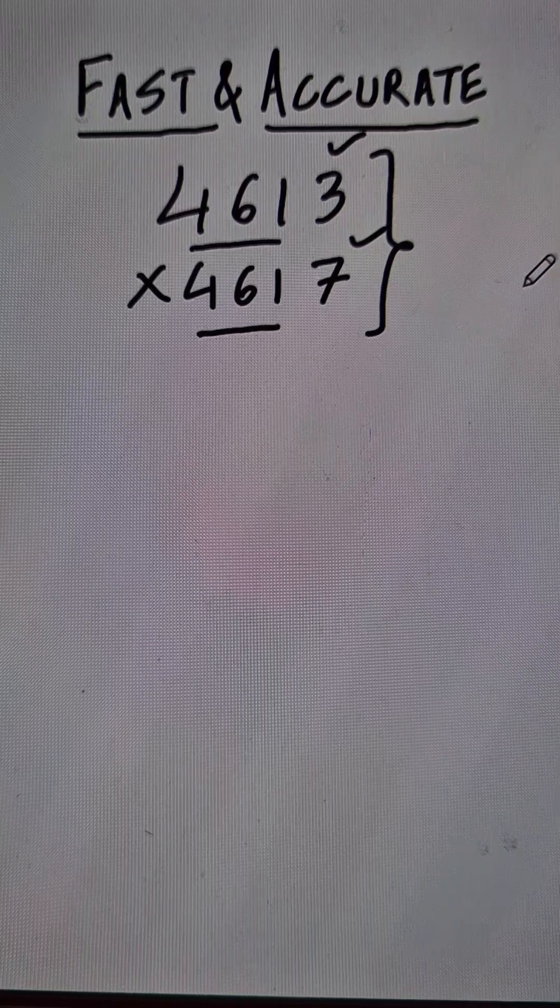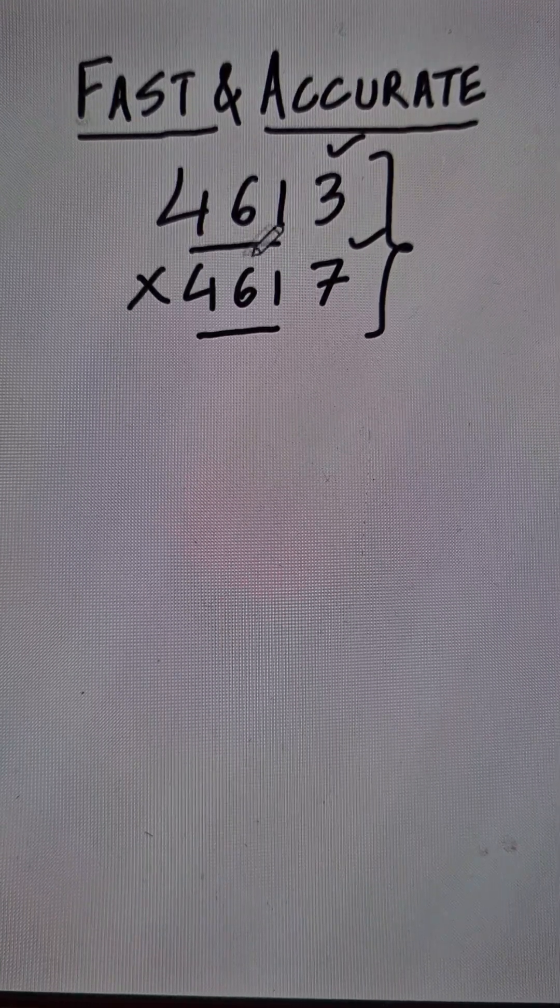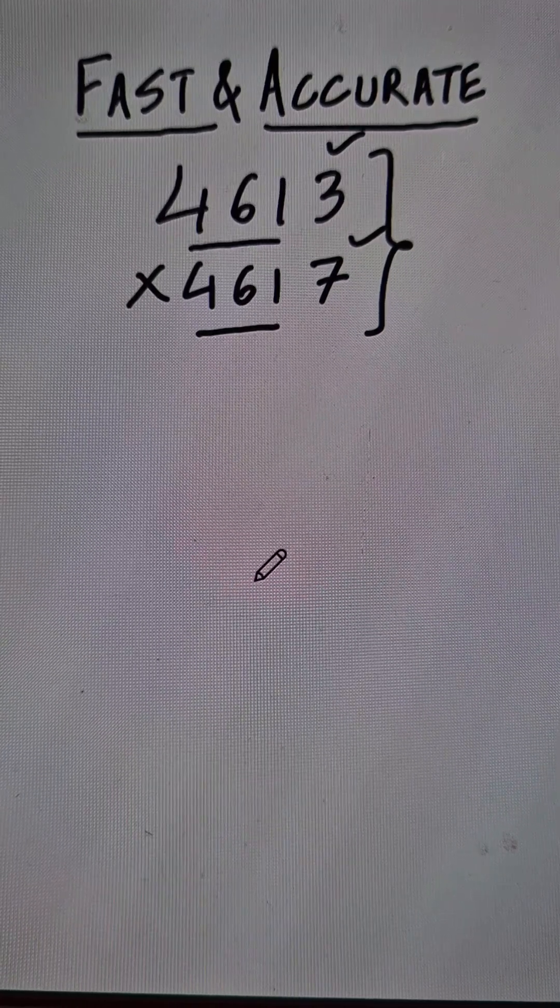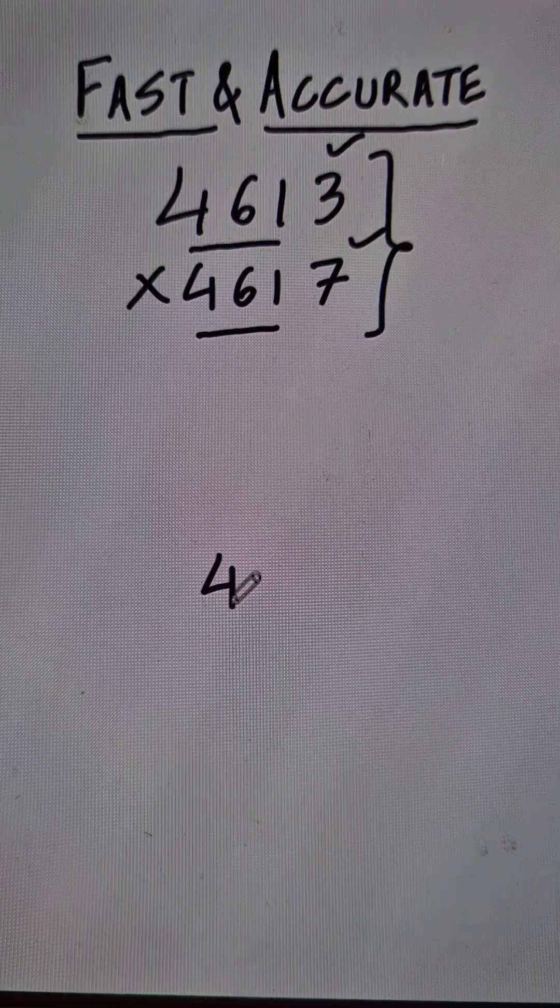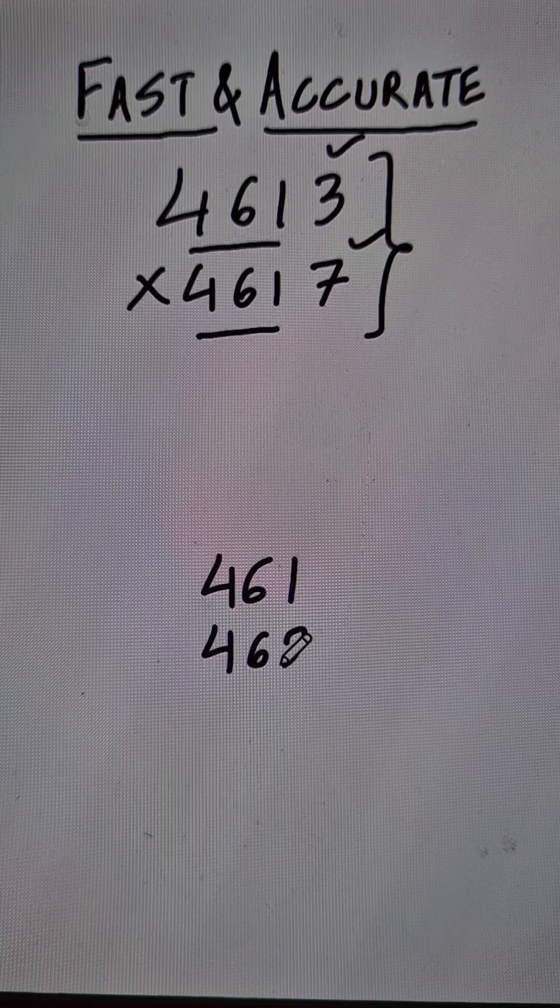So whenever this property holds good, the multiplication becomes very easy. For the first triplet of the numbers, 461, what do I have to do here? I have to multiply 461 by its consecutive number 462.